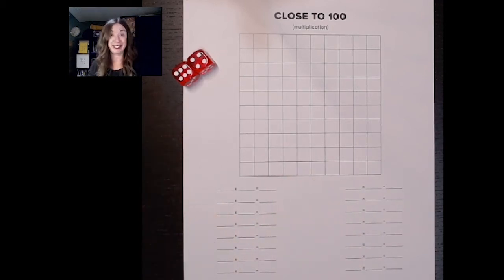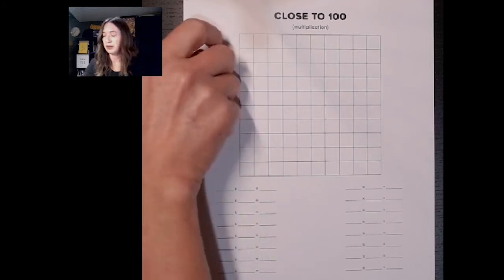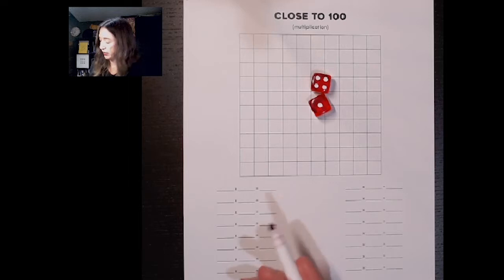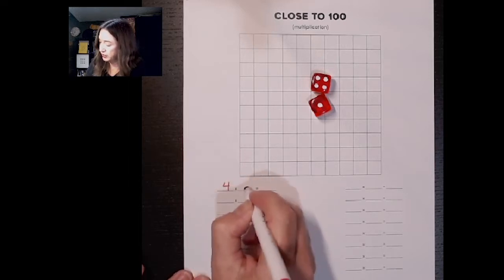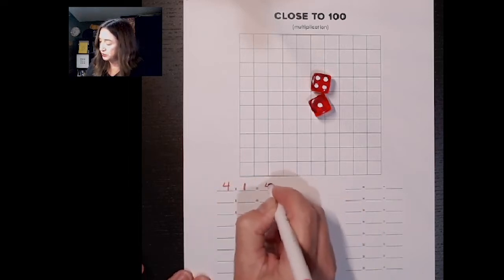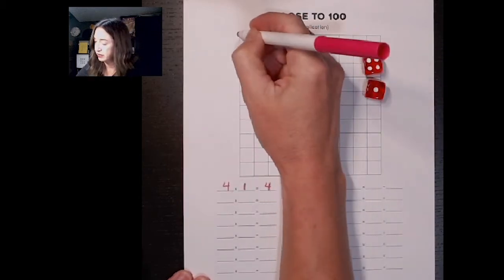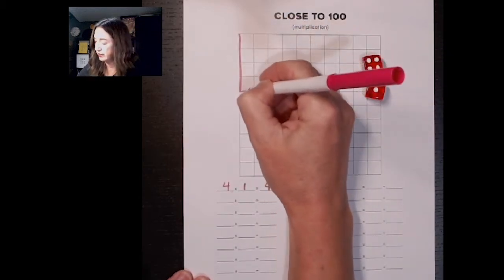So I'm going to say pink goes first. I'll roll my die. I got a 4 and a 1 so I'm going to write down here 4 times 1 equals 4 and I'm going to choose to color in a 4 by 1 array.